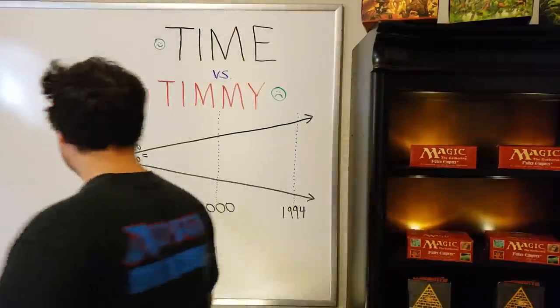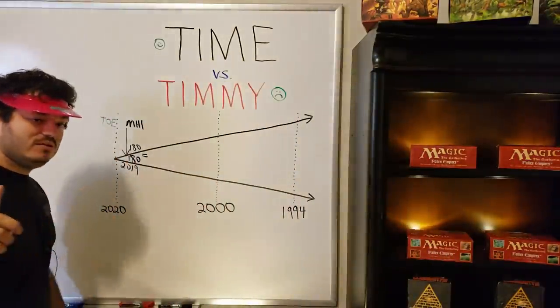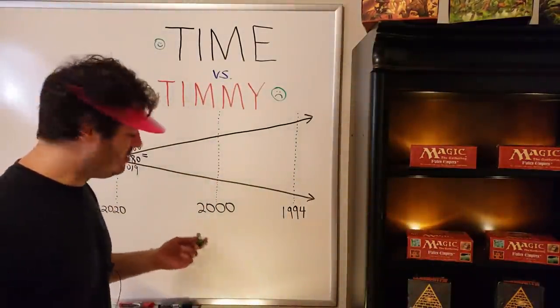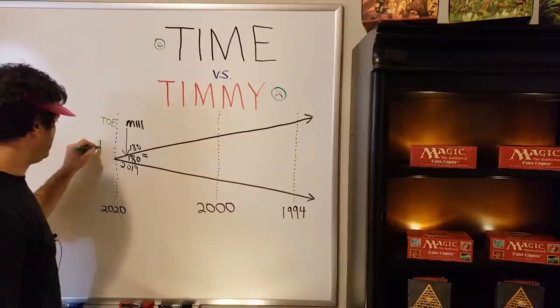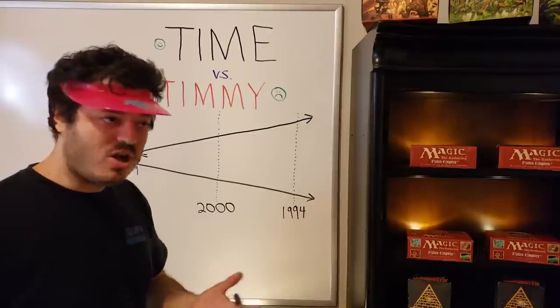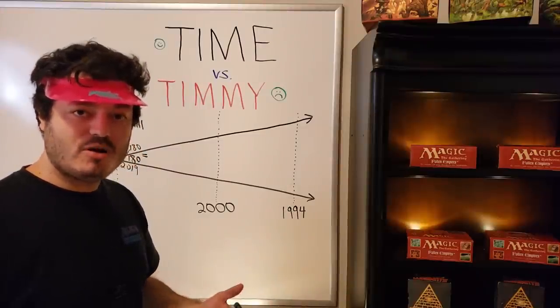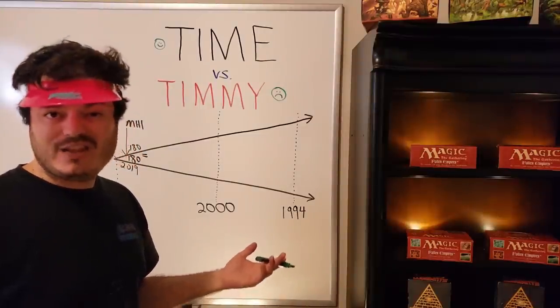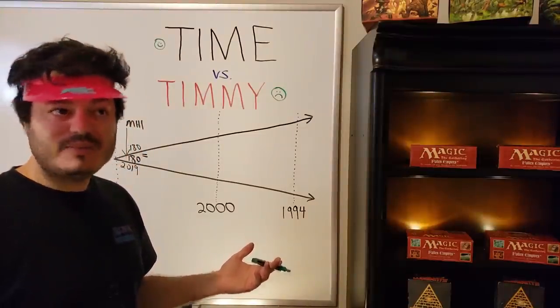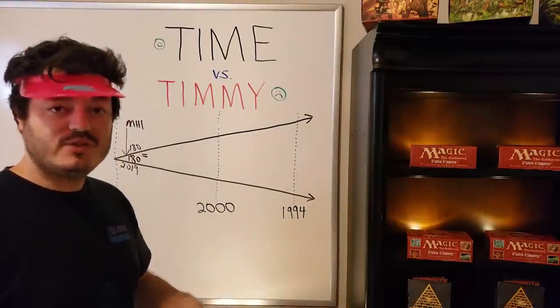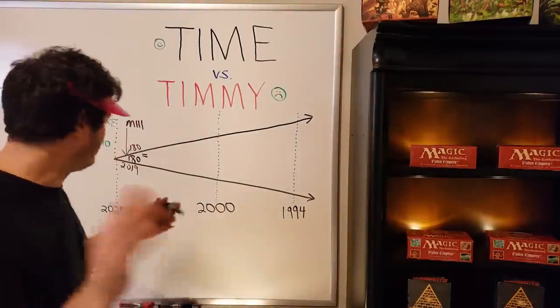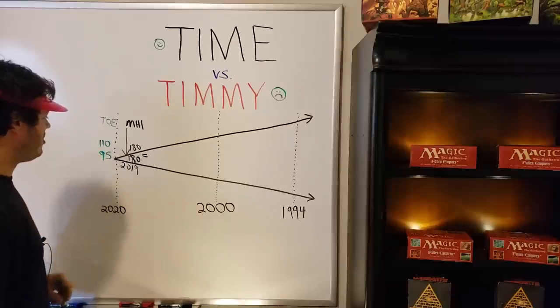So now, Throne of Eldraine, right now, expected value is still like, what? 110%? $110 a box? $110 maybe? The booster box is on average, on eBay, TCG player, the open market, the average sale price is what? 95 bucks? Maybe 90? Maybe 100? $110 at your local store? So let's just, I don't know, what do you guys want to put? 95? Let's just put 95. So $95 is the sealed product.